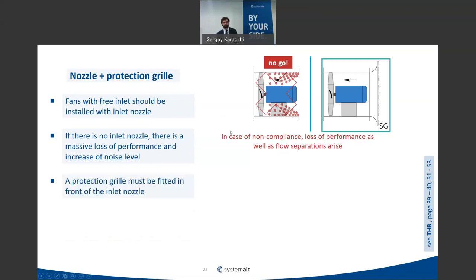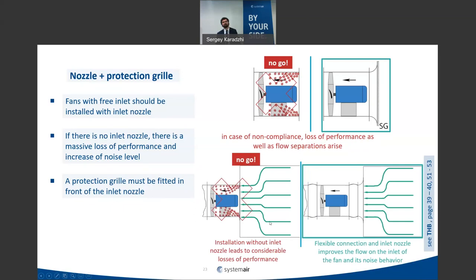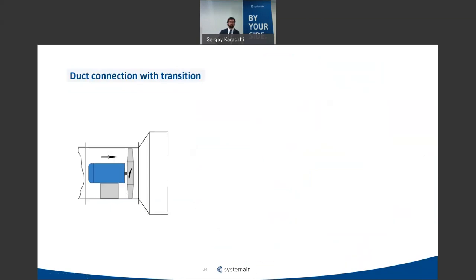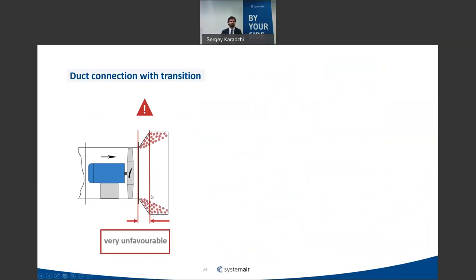If you have a chamber in front of the fan without an inlet nozzle, separation of flow will again reduce fan parameters. Flexible connections should always be installed to separate vibration distribution into the duct system. Regarding transition pieces: if you have a duct much larger than the fan diameter with a transitional piece, don't make it too short — otherwise you will have flow separation and high losses.